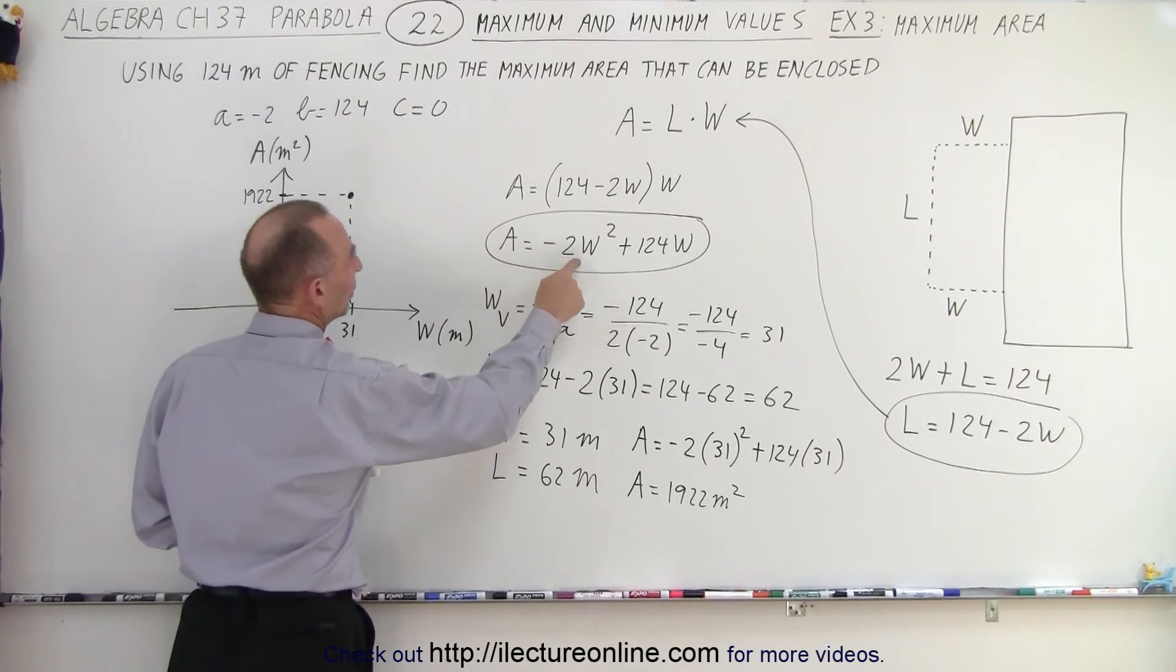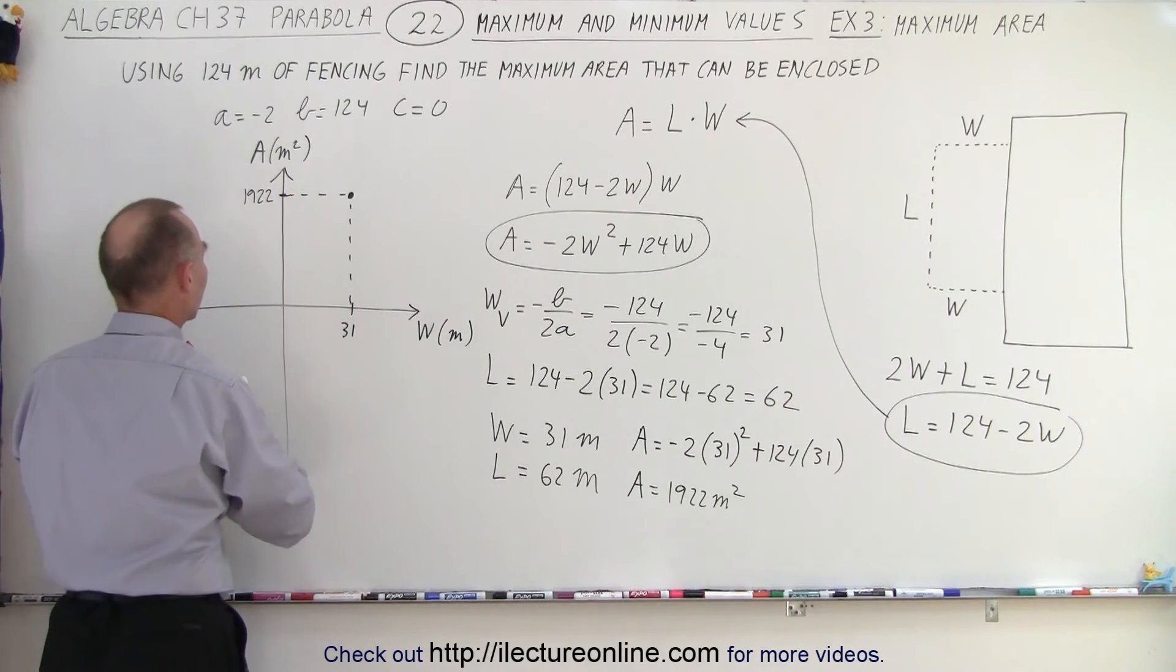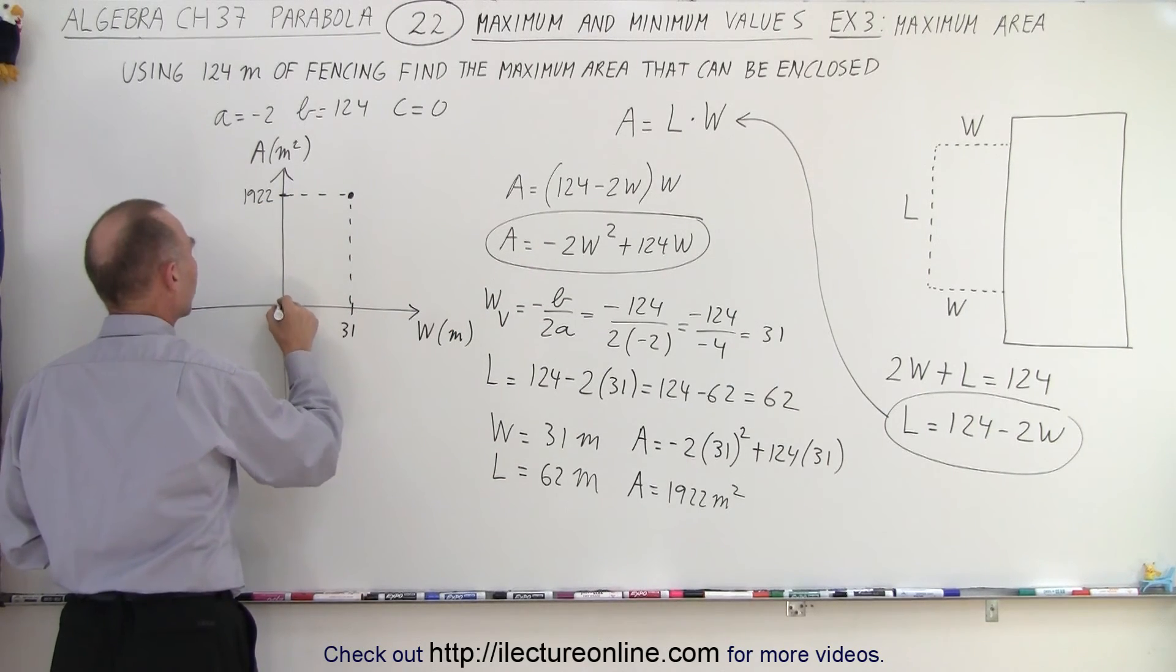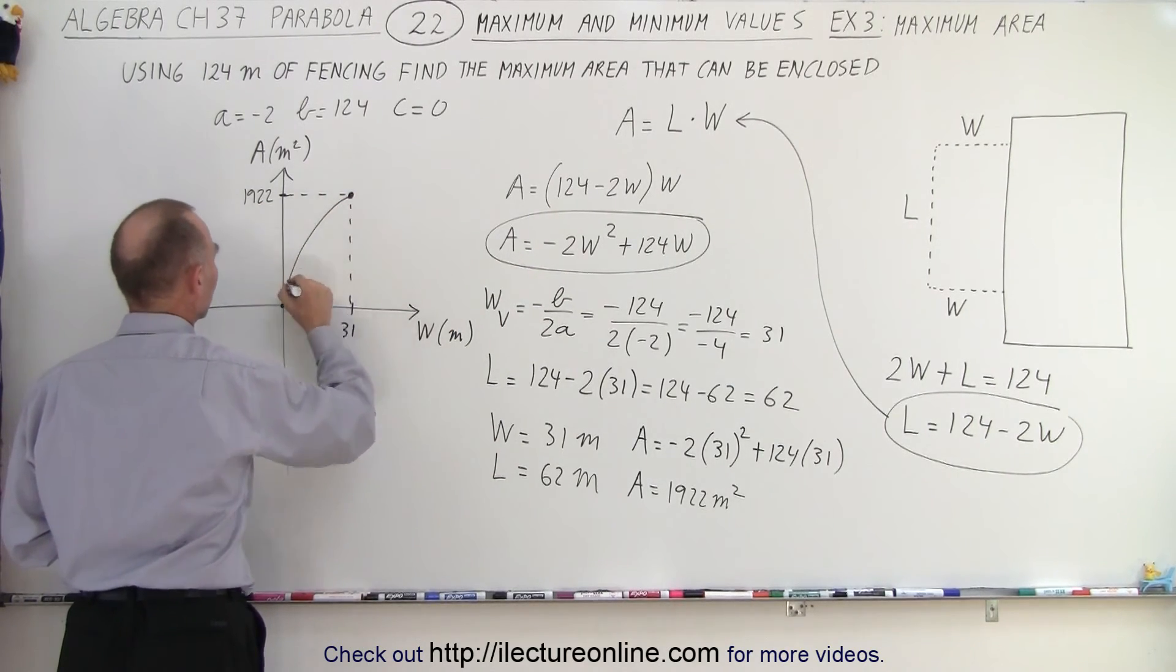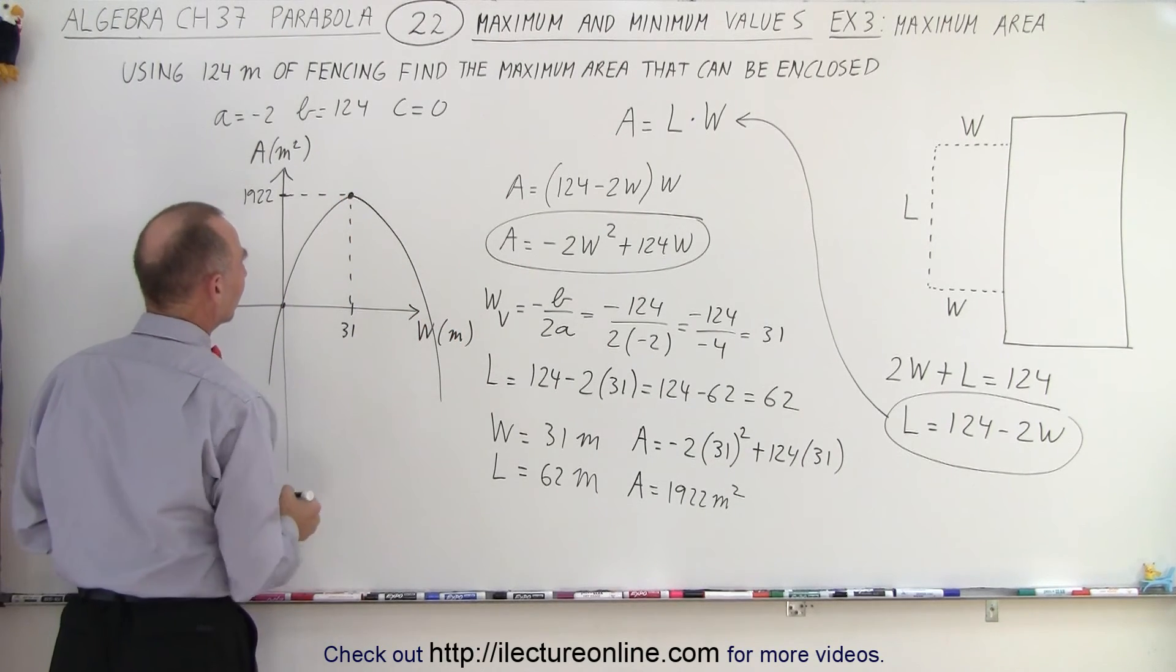Also, when W is 0, area is 0, which is right at the origin. So we know that the parabola also passes through the origin, which means that the graph will look like this.